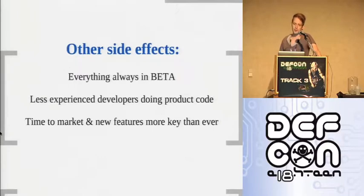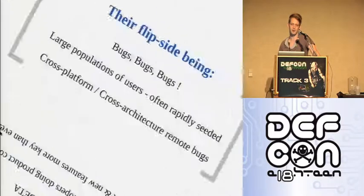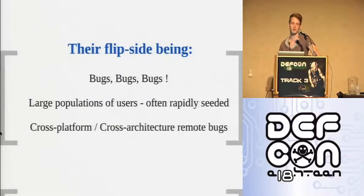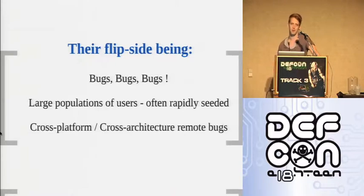Other side effects of the new development model: everything is always in beta, less experienced developers are writing code that goes into products, and time to market and new features are key. So there will be lots of new code that hasn't been tested thoroughly. The flip side is tons of bugs. There's often a new large population of users for whatever the in-app of the week is, and bugs in higher level languages are often cross-platform and cross-architecture — one bug executing across whatever architecture and OS they're running.